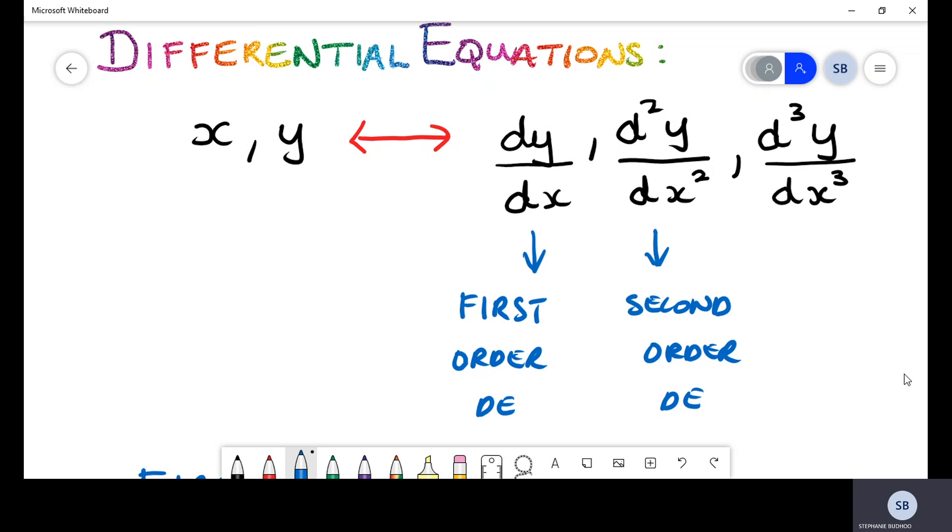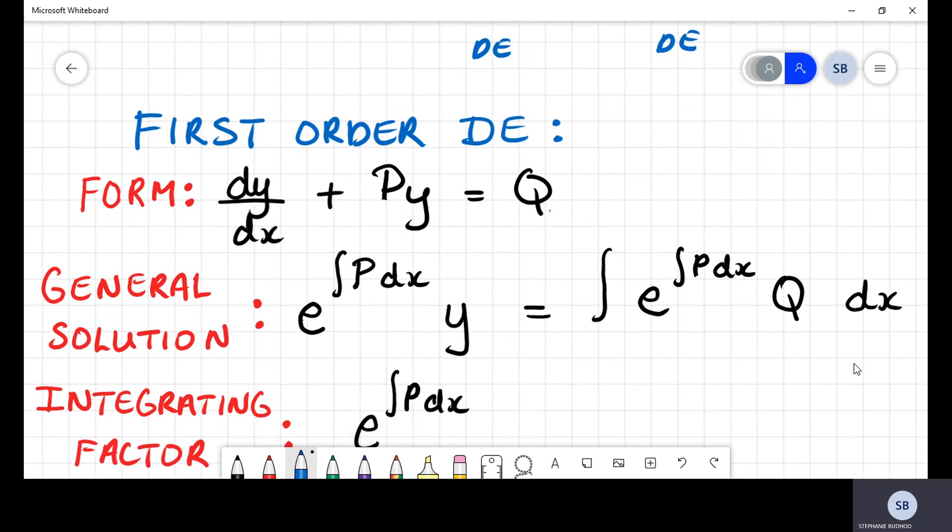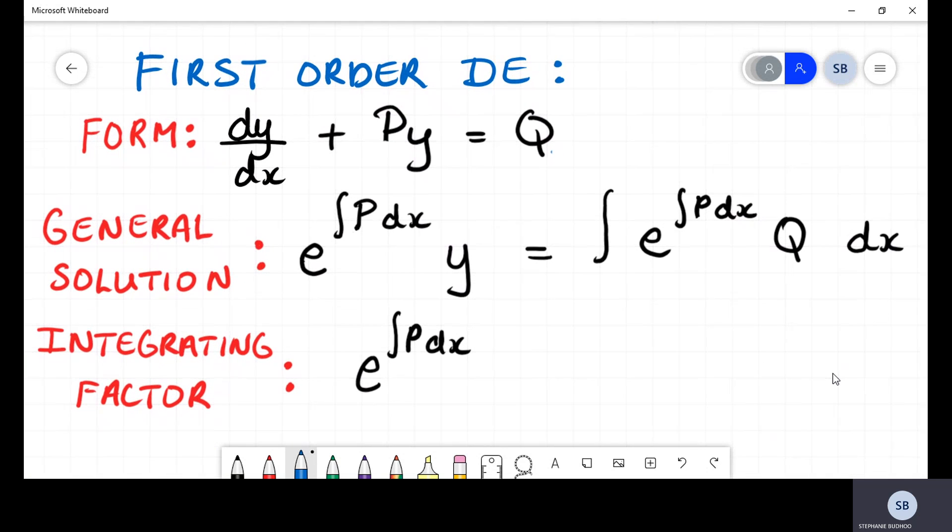For today's video, we'll be looking at a standard form of a first order differential equation. The form we're interested in is the following: if you were given a first order differential equation where you have that derivative dy/dx written as dy/dx + Py = Q.